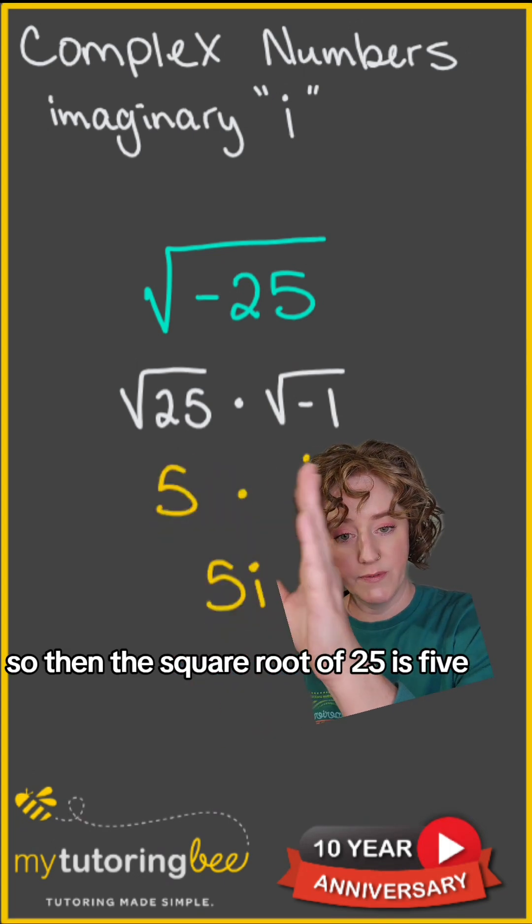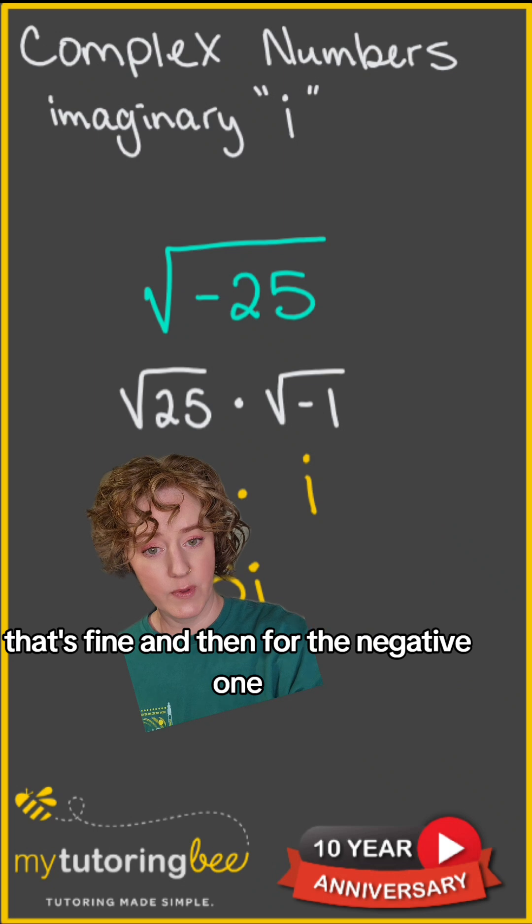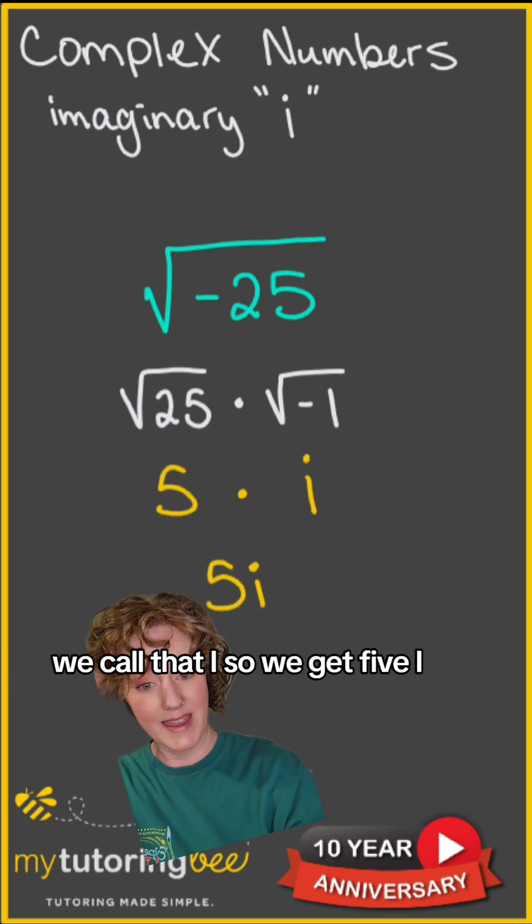The square root of 25 is 5. For the square root of negative 1, we call that i. So we get 5i.